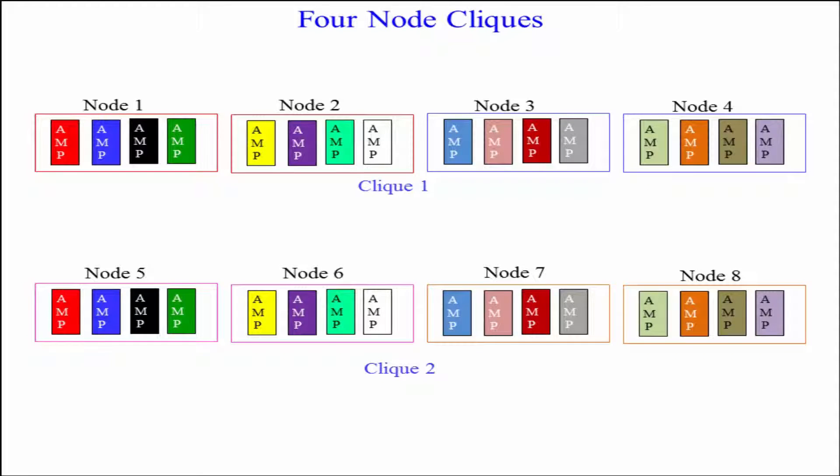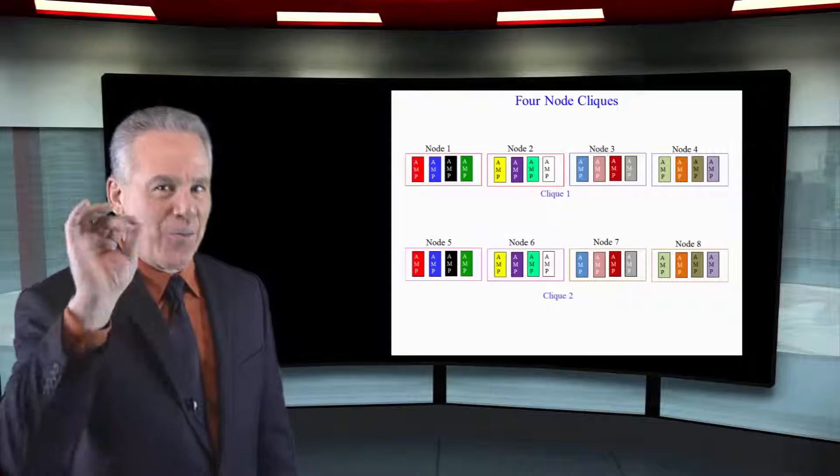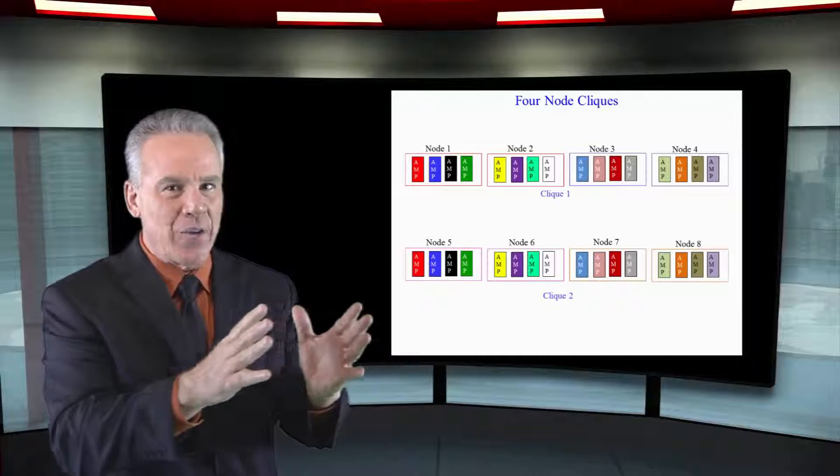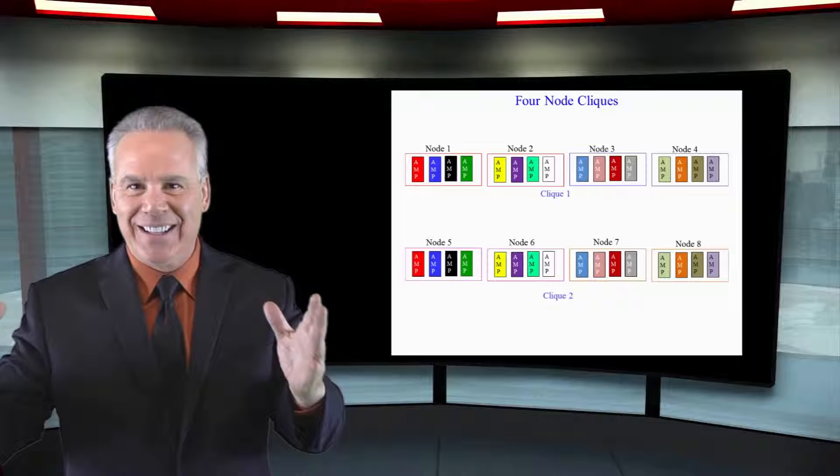Well, if we lose node number one, resets, and when things come up, couple of the amps go to the next node, couple go to the third, couple go to the fourth, and now there's not as much stress on one node. You see, those amps will migrate to the other nodes in the clique.